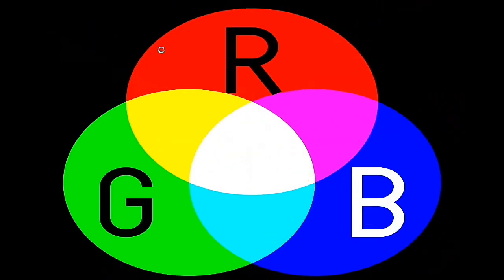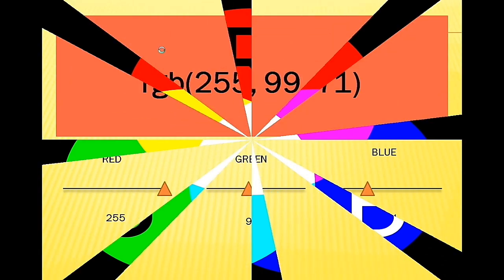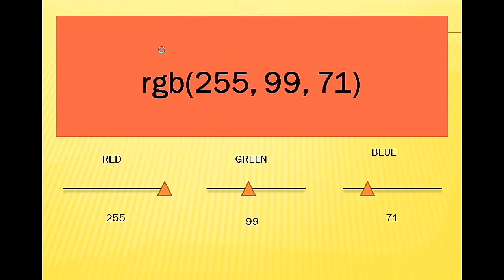For a small example - if we give all zeros (0, 0, 0), the background color will be black. If we give complete 255, 255, 255 it will show white color. You can adjust the colors of RGB this way.